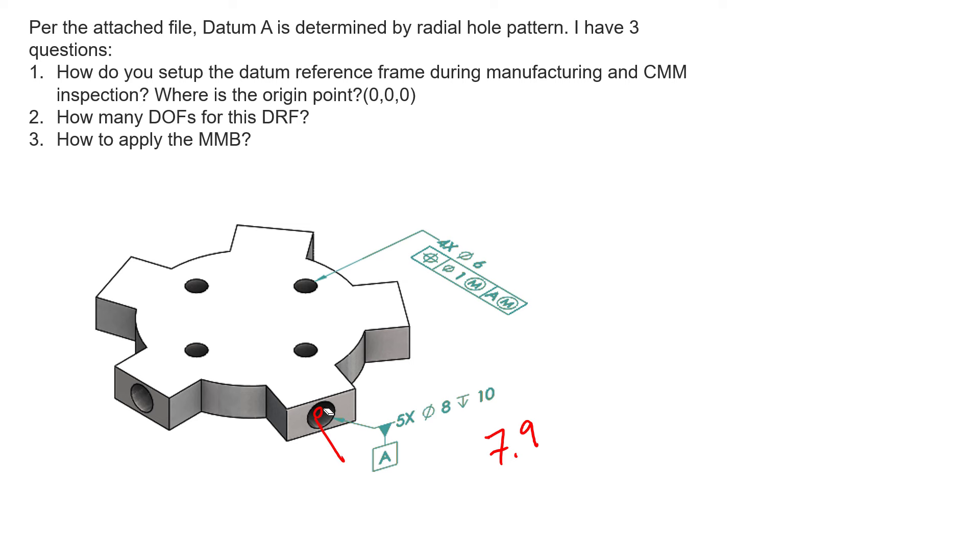What we can do is picture all of those cylinders expanding in their locations inside this part at all of these locations. But once they hit 7.9 in diameter, they are done expanding. You can see that if each one of these holes existed at, let's say, 8 or 8.1, there's going to be a little bit of clearance between the datum simulator that stopped at 7.9 and the actual hole.